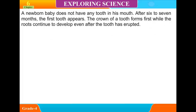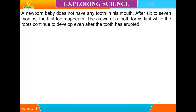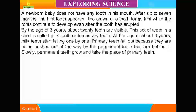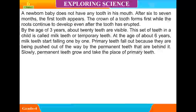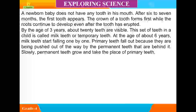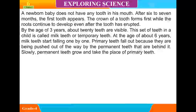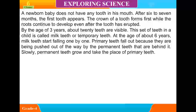After 6 to 7 months, the first tooth appears. The crown of the tooth forms first while the roots continue to develop even after the tooth has erupted. By the age of 3, about 20 teeth are visible. This set of teeth in a child is called milk teeth or temporary teeth.